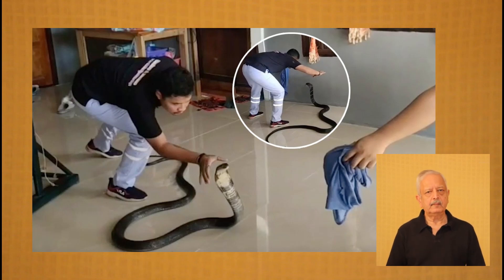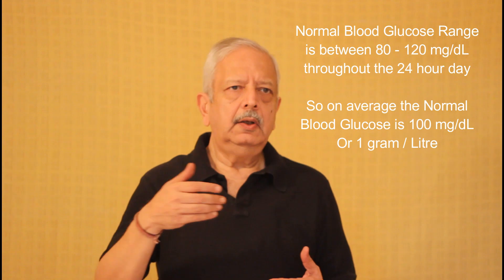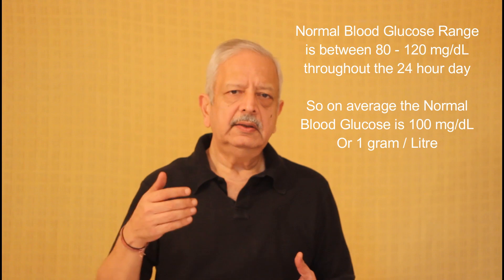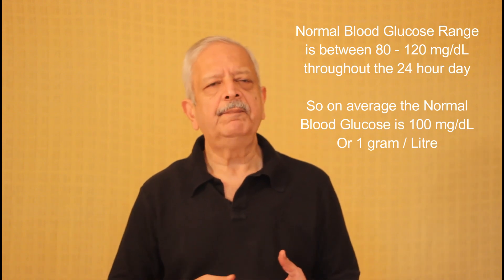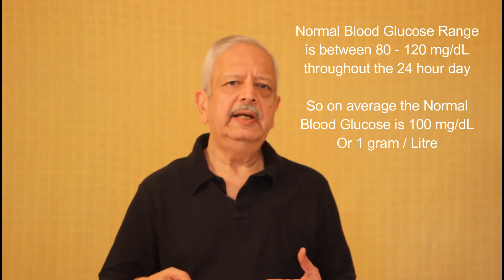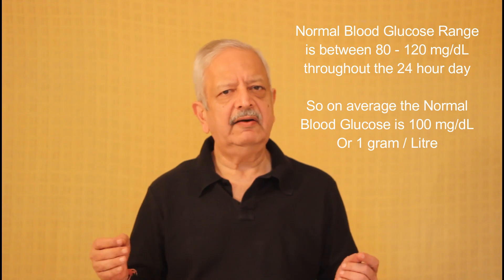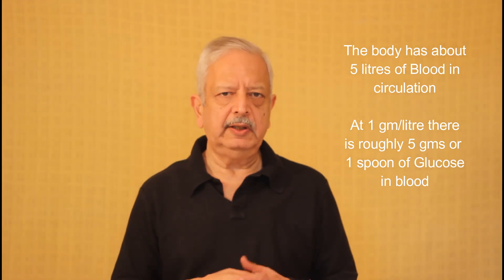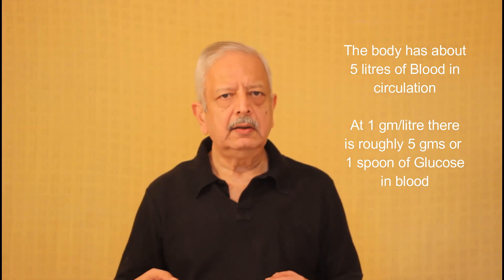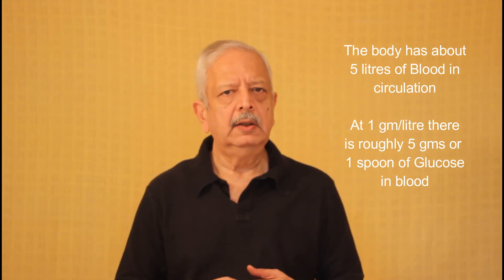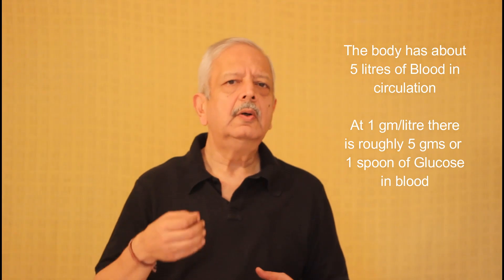In non-diabetics, normal blood glucose runs between 80 and 120 milligrams per deciliter throughout the day. That equates to about one gram per liter. If we consider 100 as the average for the 24-hour period, the body has about five liters of blood, so one gram per liter translates to about five grams of glucose or sugar in your blood — equivalent to about one spoon.